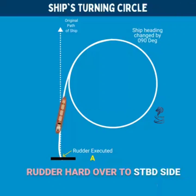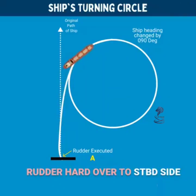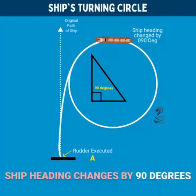the rudder is given hard over to the starboard side. It takes a little time for the action of the rudder to kick in before the ship starts to turn. Once the ship changes its heading by 90 degrees from the original course,